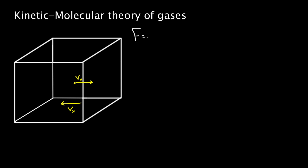Force equals ma, but it also equals delta p over delta t — the change in momentum over the change in time. This is an alternate form of Newton's Second Law. The change in momentum is m times delta v. For this elastic collision, the particle struck the wall and bounced back with the same speed, so the change in velocity is two times vx — it came in with v and left with negative v, giving a magnitude of 2mvx.